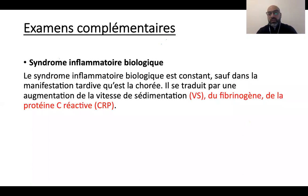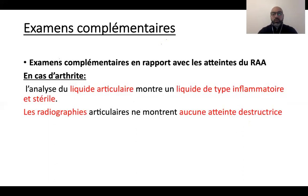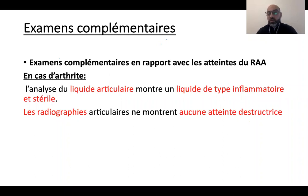Les examens complémentaires : avec des signes généraux, il faut faire systématiquement un bilan biologique complet incluant la recherche d'un syndrome inflammatoire avec fibrinogène, CRP, VS, ainsi que le bilan rénal et l'ionogramme sanguin. Élément important : devant toute fièvre inexpliquée chez un enfant, il faut rechercher une bactériémie, donc ne pas oublier de faire des hémocultures. Dans ce cas, les hémocultures seront négatives car c'est une réaction immunologique, il n'y a pas de germes dans le sang.